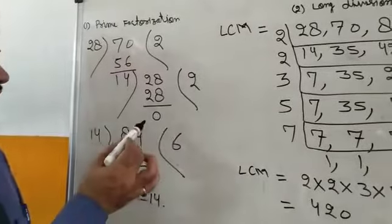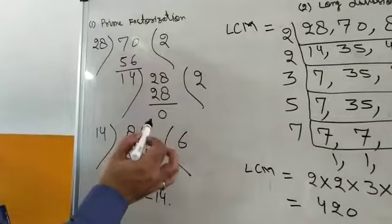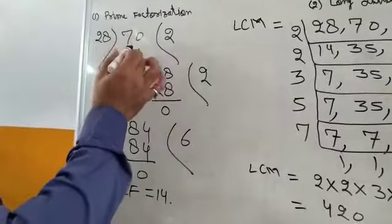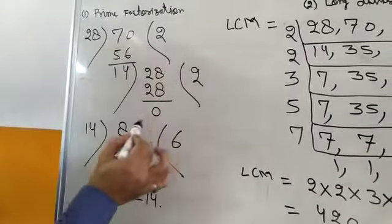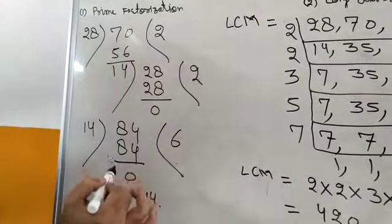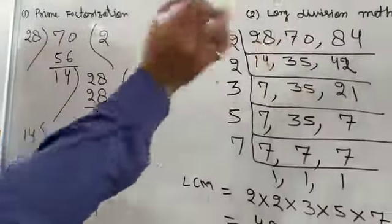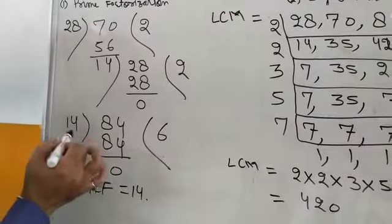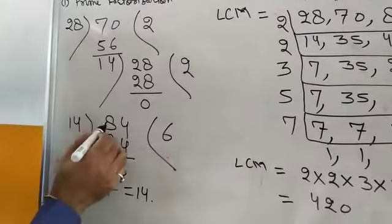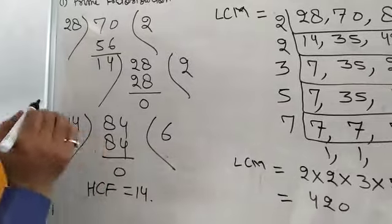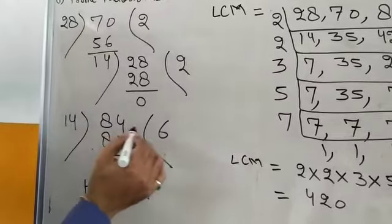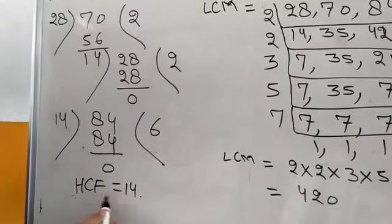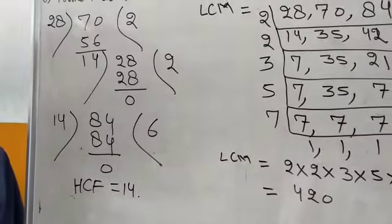In the previous question, we found that the HCF of two numbers is 14. But there is one more number, that is 84. So if we divide 84 by 14, the remainder is 0. Therefore, the HCF of all three numbers will also be 14.